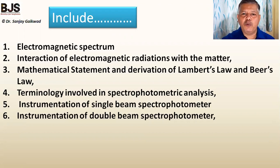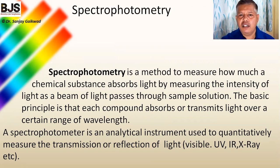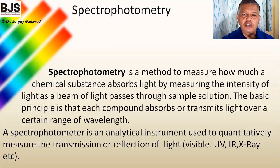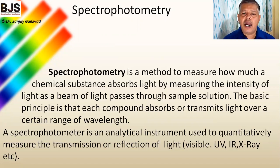Then instrumentation parts like single beam and double beam spectrophotometer. A spectrophotometer is an analytical instrument used for quantitative analysis. It measures the transmitted, scattered, or reflected light, and from that, how much light gets absorbed by the molecule present in the solution can be calculated — that is, finally, the concentration of the unknown solution or concentration of metal ions present in the solution.